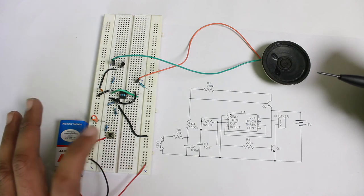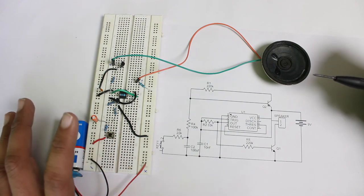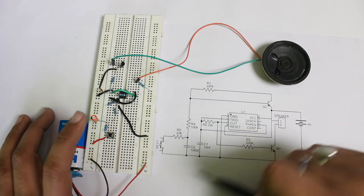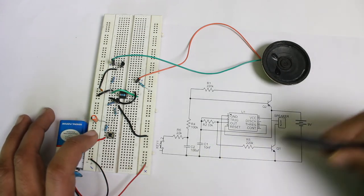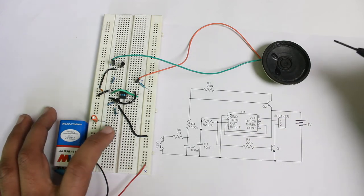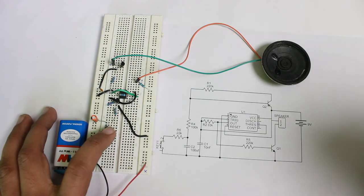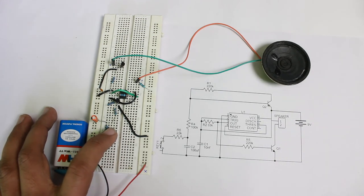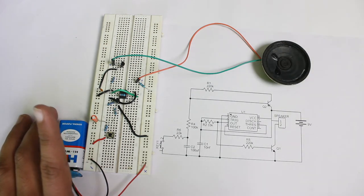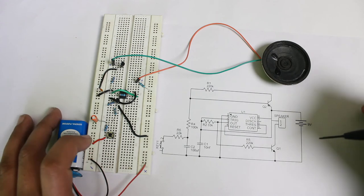So you can see when we press the button for a small period of time, you can hear a very small pulse of sound. But if you press it for a larger amount of time like this, you can see it is going for much longer. So in this way the circuit is working.